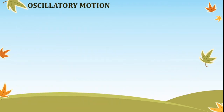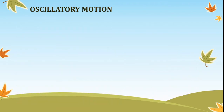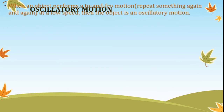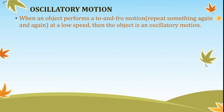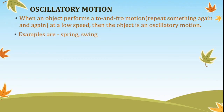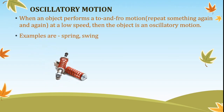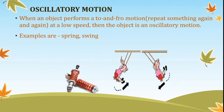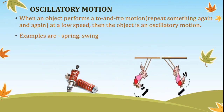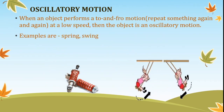Oscillatory motion. An object performing a to-and-fro motion at a low speed is called oscillatory motion. Spring motion and swing motion are best examples of oscillatory motion.